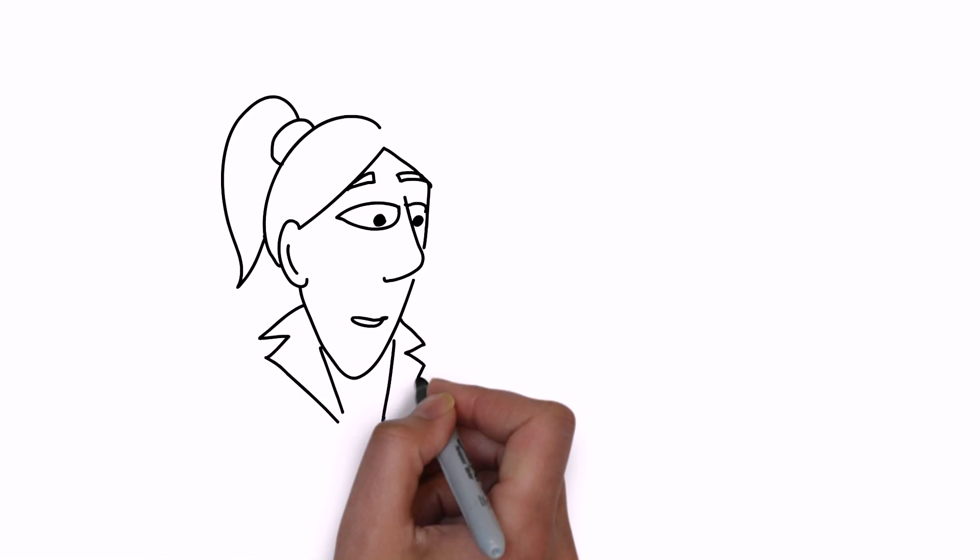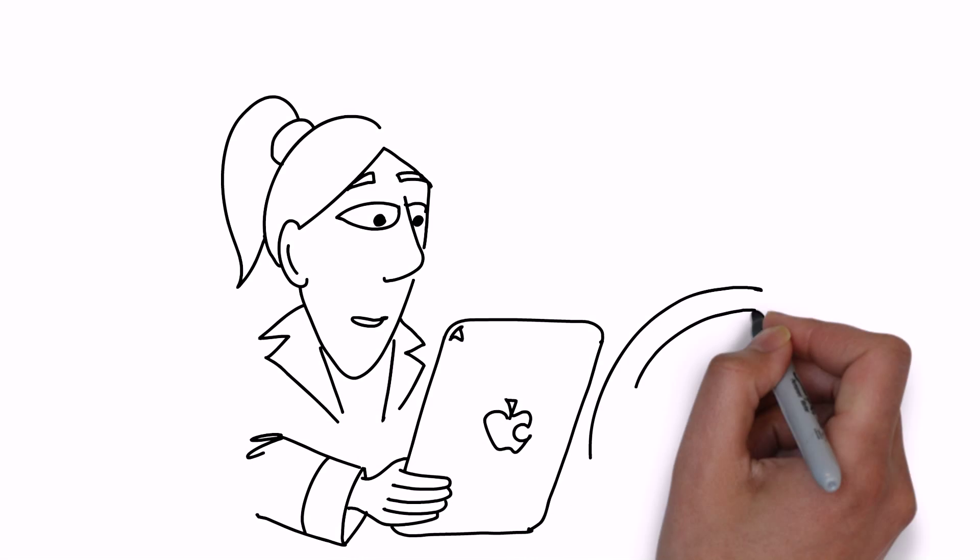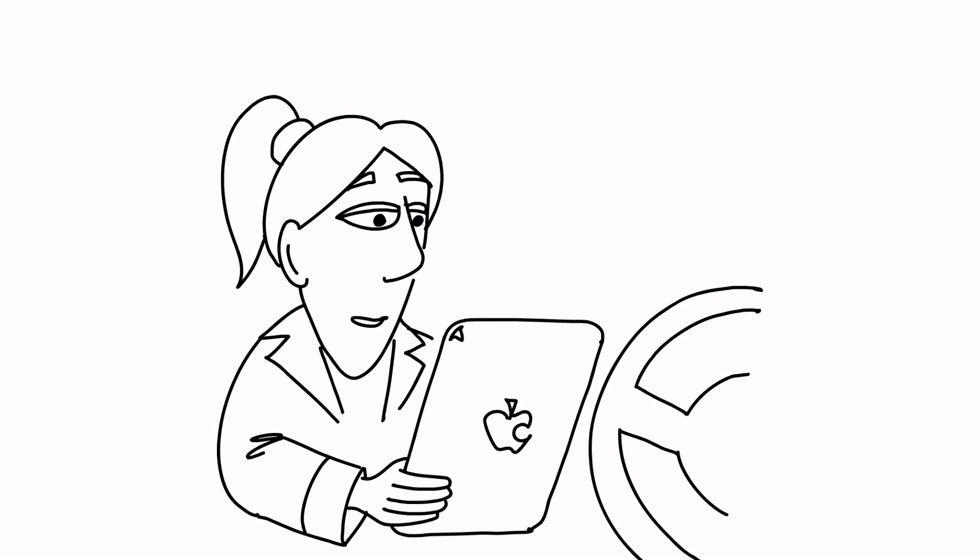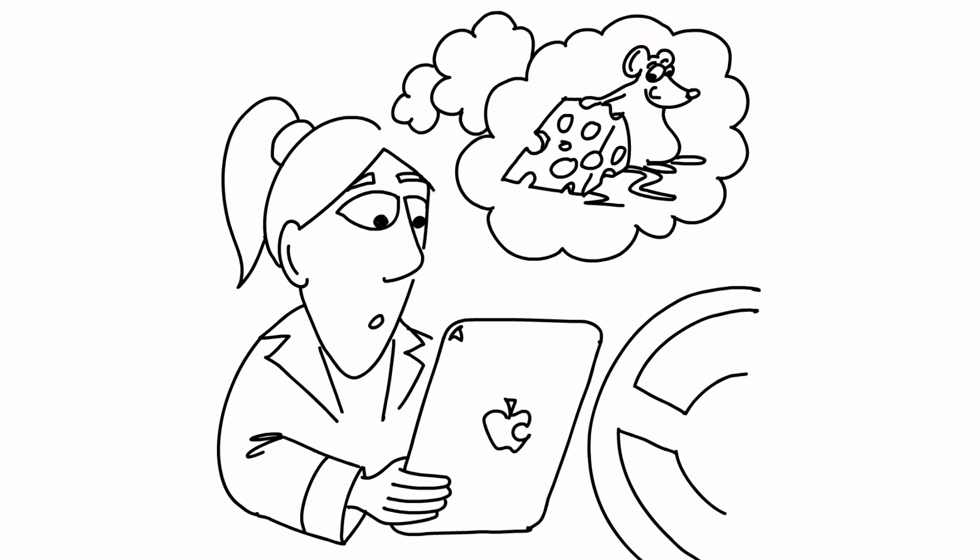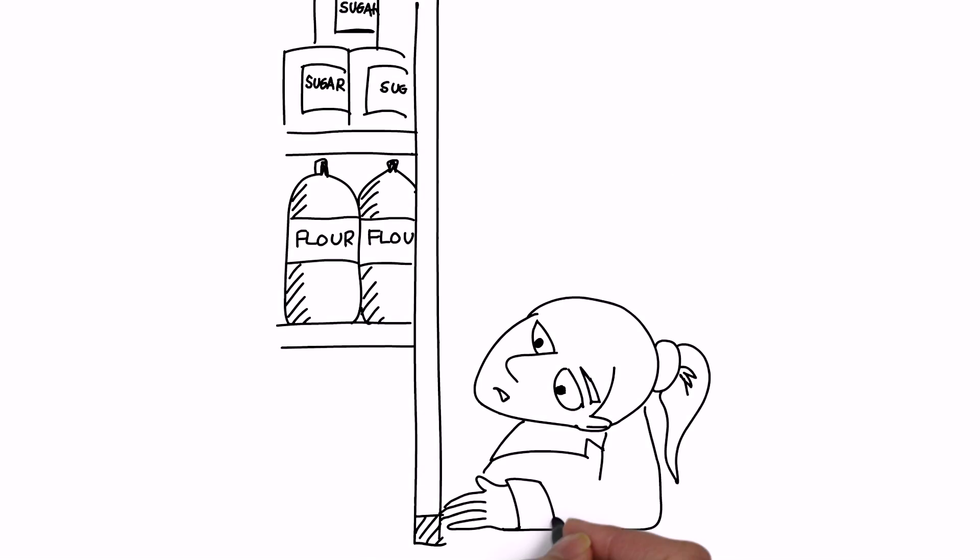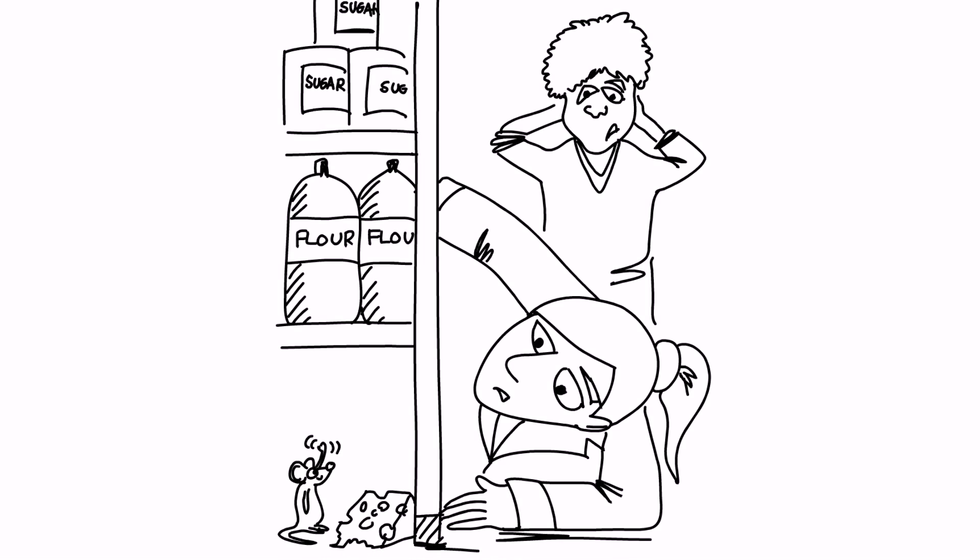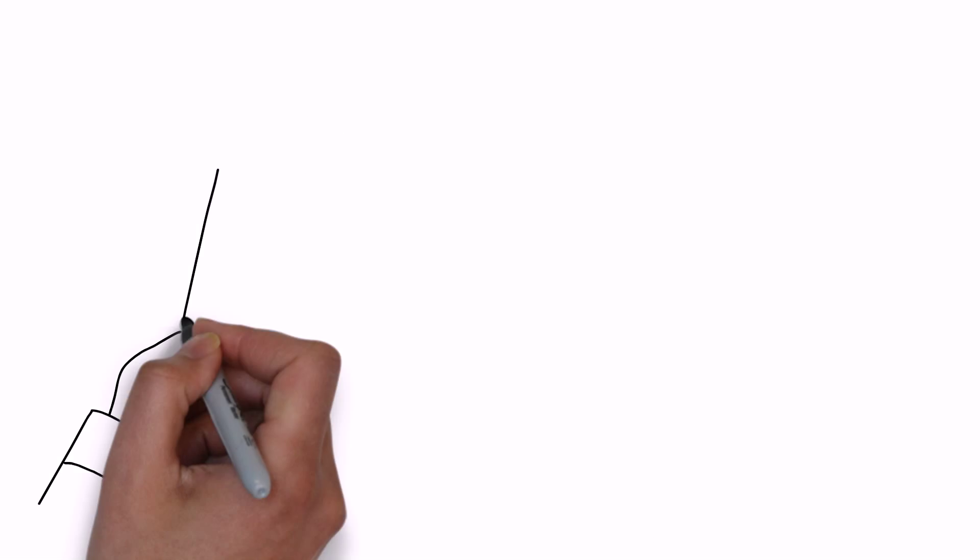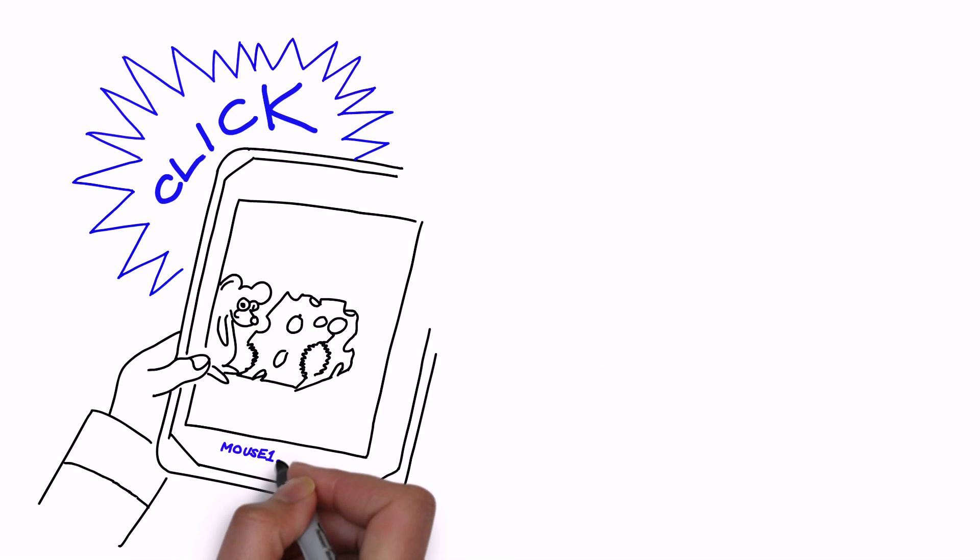As she leaves for the next visit, Janet checks the app and spots a new service request. A nearby restaurant has complained that there are mice in the kitchen. She visits the premises and finds that there is indeed a mouse infestation. Janet raises a request for an emergency visit with the pest control team using AllOnMobile.